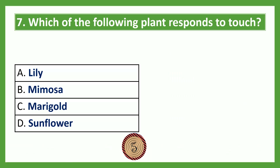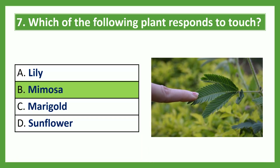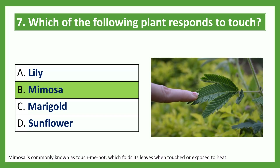Which of the following plants responds to touch? Option A: lily; Option B: mimosa; Option C: marigold; Option D: sunflower. The answer is Option B, mimosa. Mimosa is commonly called the touch-me-not plant. This plant folds its leaves when touched or exposed to heat.